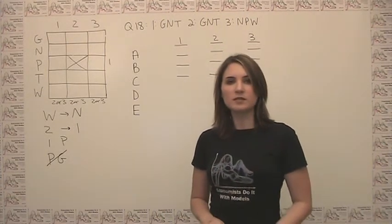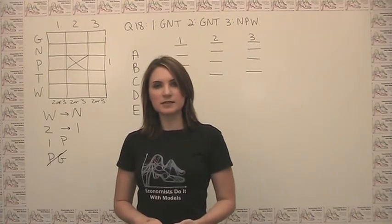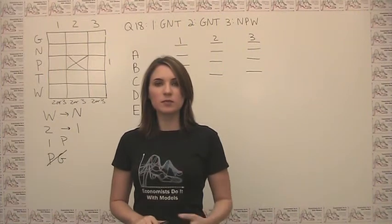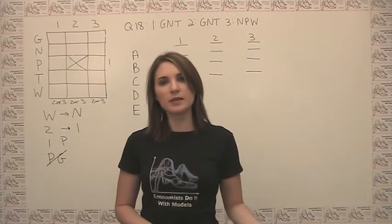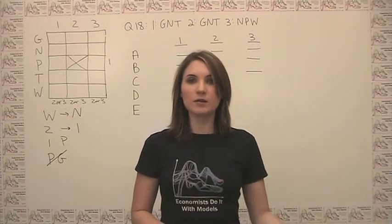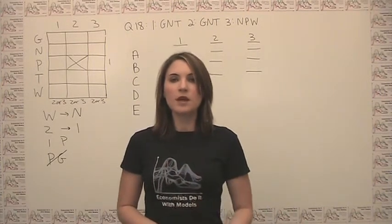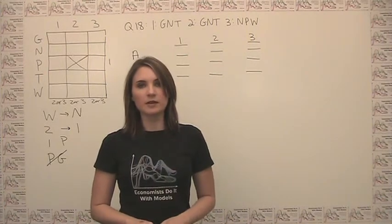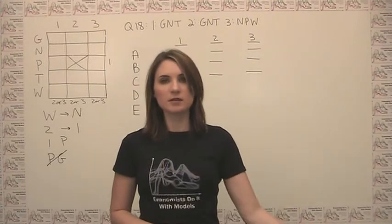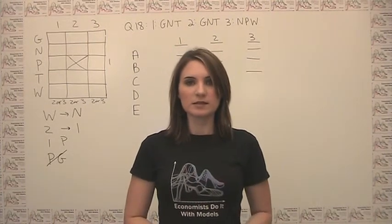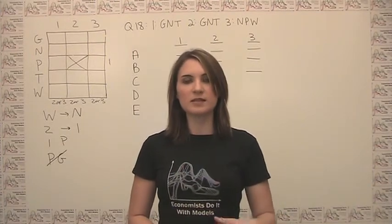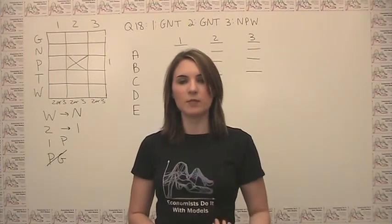Now, two things to note about this question before we get to the answer choices. The first is that it asks which of the following could be true, so we're probably going to want to use process of elimination. It's generally easier to show that something cannot be true than to show that it can be true. The other thing to note is because we were given some upfront information, we want to see what we can do with that and take that as far as we can before we start looking at the answer choices, because we don't want to start blindly going through the answer choices because that's going to take a lot more time than if we do what we can upfront.